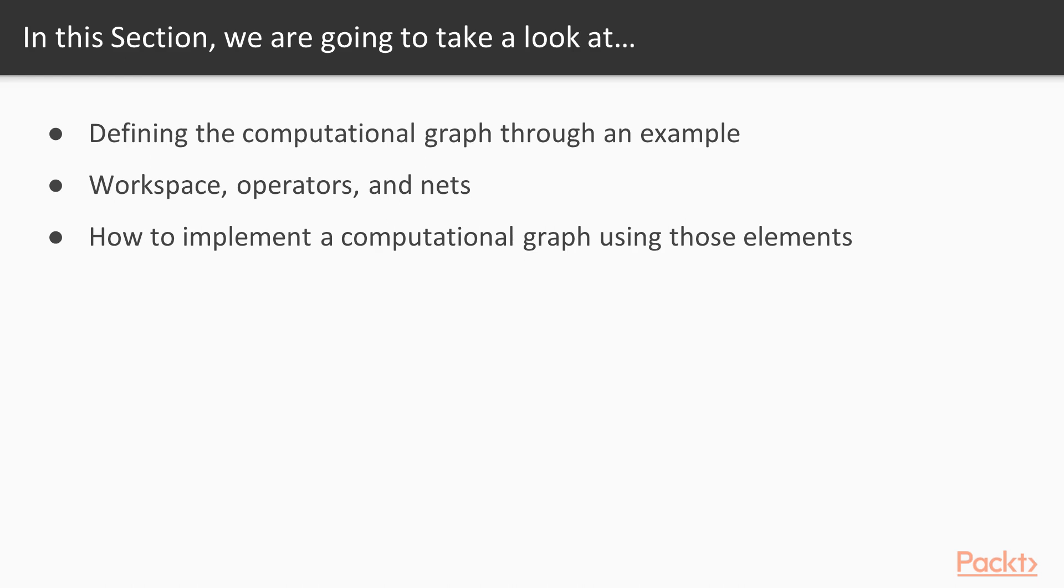In this section, we will first define the computational graph through example. A computational graph can be a convolutional neural network, recurrent neural network, or a linear regression. Computational graph is a new way of thinking computational operations. It has a more powerful way of representing those kind of operations.